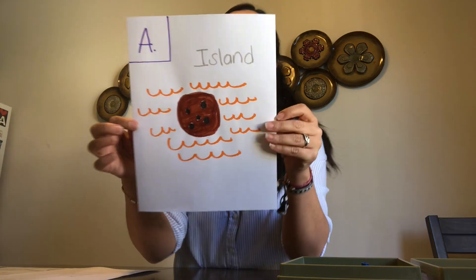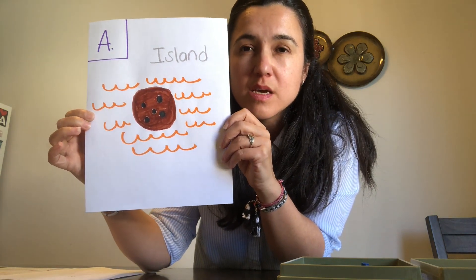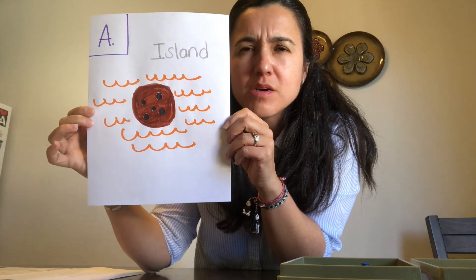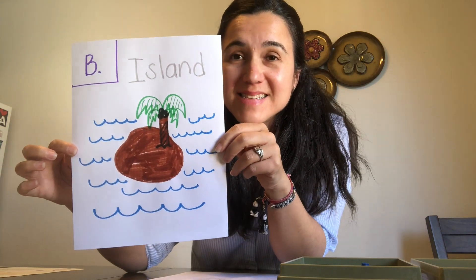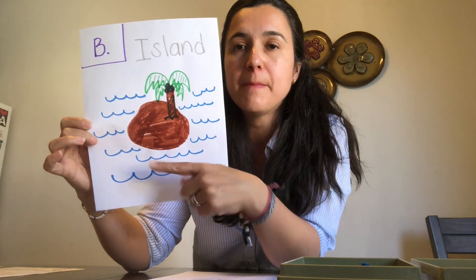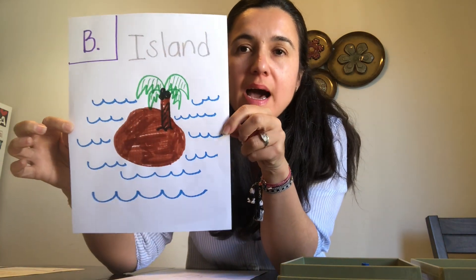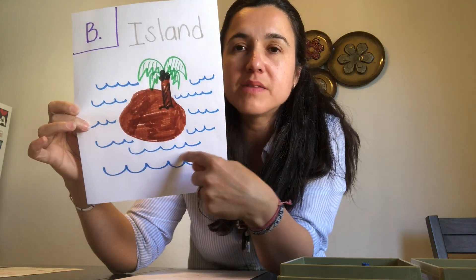An island — what's an island? Option A: an island is a cookie, a chocolate cookie surrounded by orange juice. Option B: an island is a piece of land surrounded by water. If your answer is letter B — right, that's the right answer. An island is a piece of land surrounded by water.